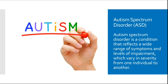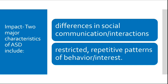One is autism spectrum disorder — sometimes called 'the spectrum' — because autism spectrum disorder is a condition that reflects a wide range of symptoms and levels of impairment, which vary in severity from one individual to another. We have students on the spectrum from the very low end to the very high end. Autism can cause issues in critical areas of development, including communication, whether verbal or nonverbal, social interaction, sensory processing, play skills, and behavior. It impacts primarily two major characteristics: differences in social communication and interactions, and restrictive repetitive patterns of behavior and interest.